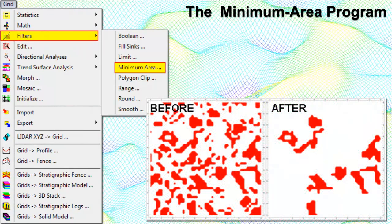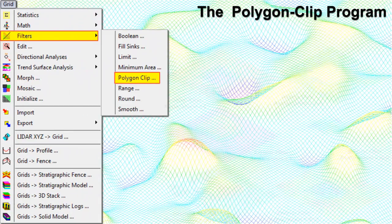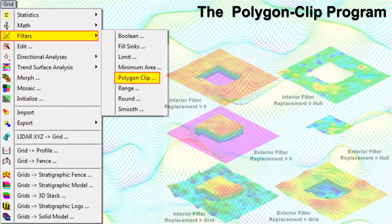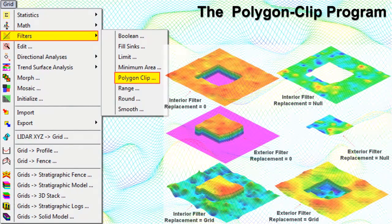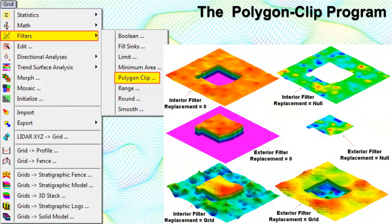The Minimum Area program reads either a Boolean or a conventional grid model and nullifies contiguous cells whose combined area is less than a user-defined area. This tool provides a means for eliminating exploration targets that are too small. The Polygon Clip program is used to set the grid nodes inside or outside a polygon to either a user-specified value or to the values defined within another grid model.